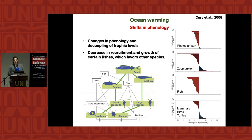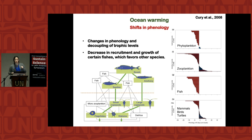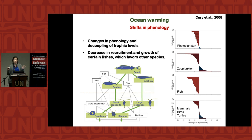Another problem involves time. As the ocean warms, seasonal cycles shift — the water becomes warm earlier in the year and colder later, creating a longer warm period. Phytoplankton depends on the dynamics of cold water, warm water, and turbulence to grow. In most productive areas of the ocean, phytoplankton blooms — especially spring blooms — are occurring earlier.